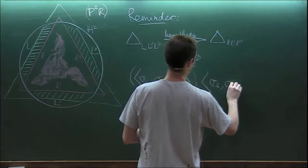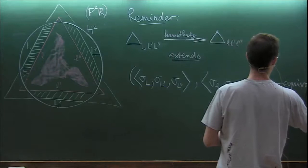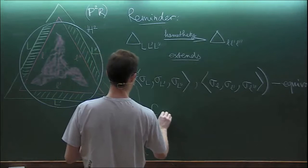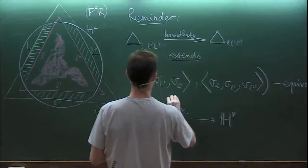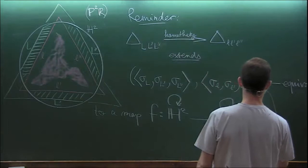Action of that group and of the other group, sigma lowercase L, L prime, L double prime, equivariantly to a map F from H2 to H2. So the first group acts on the source H2 and the second group acts on the other H2. And that map is contracting.